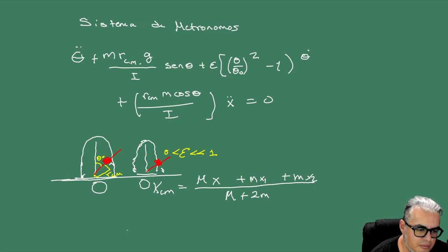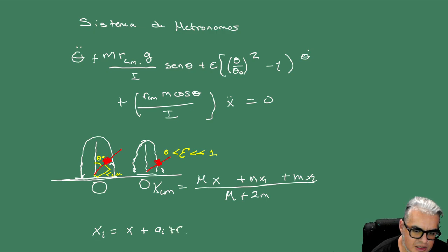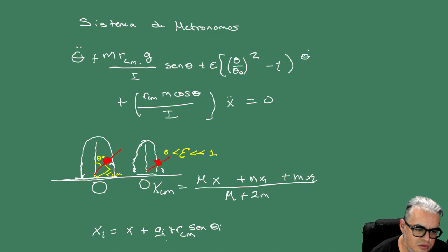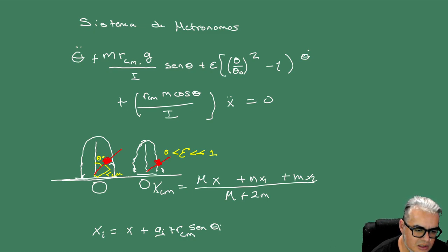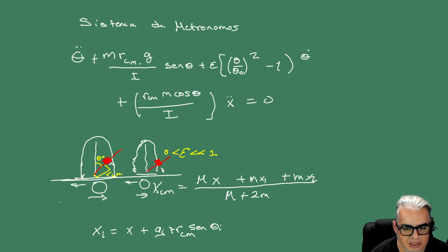Lo que vamos a tener al final es que cada X_i se va a ver como X más una corrección A_i, más la distancia hacia el pivote del metrónomo por el seno del ángulo correspondiente. Esta A_i denota la posición de uno menos la posición del otro. La base se mueve hacia acá cuando el peso cae de un lado, y cuando cae del otro lo empuja de regreso; esa diferencia de posición la vamos a llamar A_i.